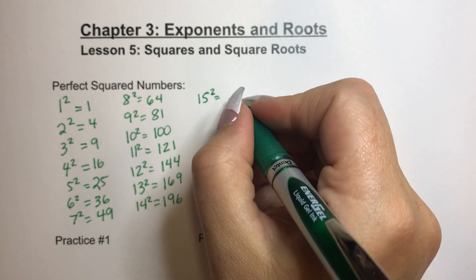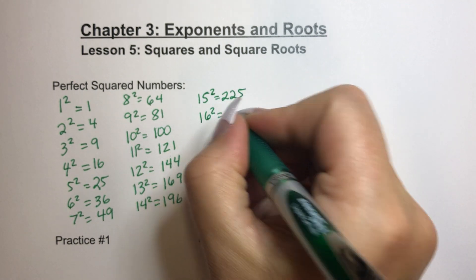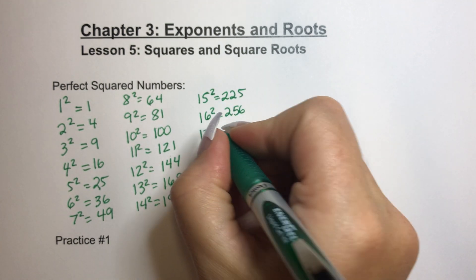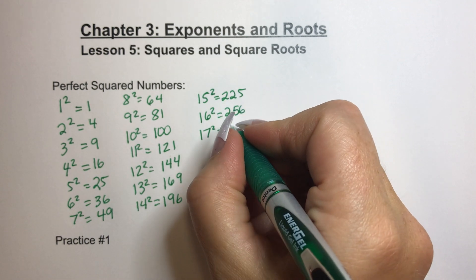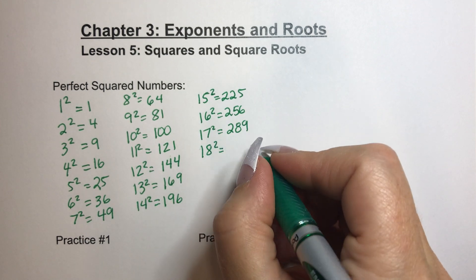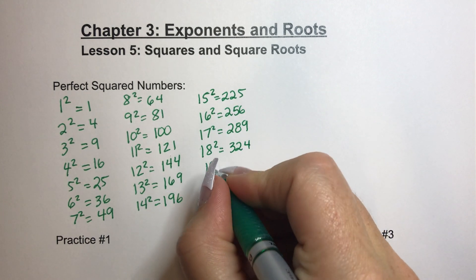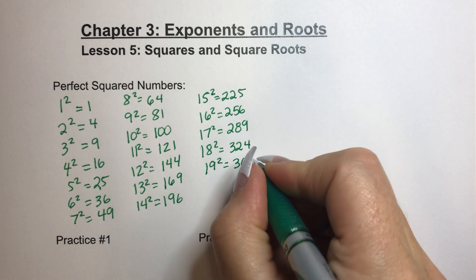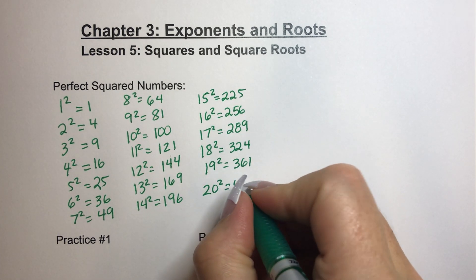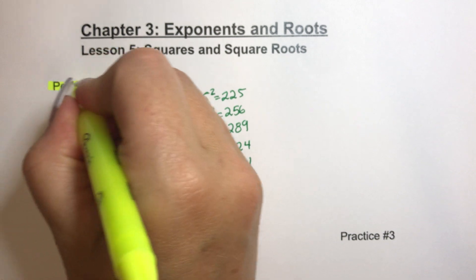15 squared is the same thing as 15 times 15, which is 225. 16 squared is the same thing as 16 times 16, which is 256. 17 squared is the same thing as 17 times 17, which is 289. 18 squared is the same thing as 18 times 18, which is 324. And 19 squared is the same thing as 19 times 19, which is 361. And lastly, 20 squared is the same thing as 20 times 20, which is 400. So these right here are all perfect squared numbers.